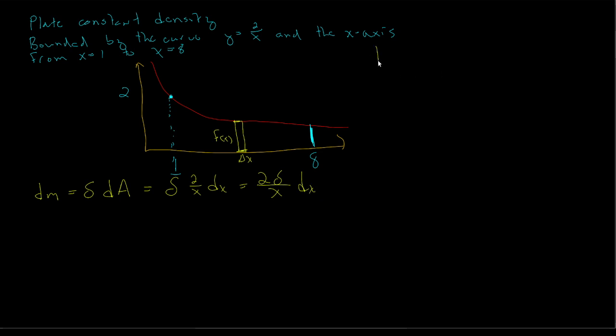That means our total mass for the plate will be the integral from 1 to 8 of 2 delta over x dx. We can pull the 2 delta out because it's constant, and so we have our mass integral.